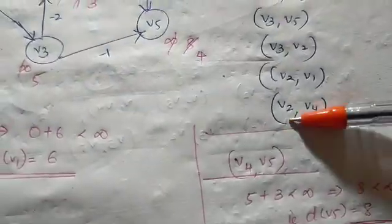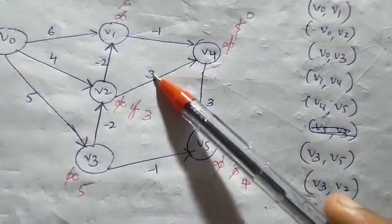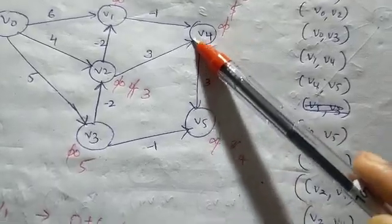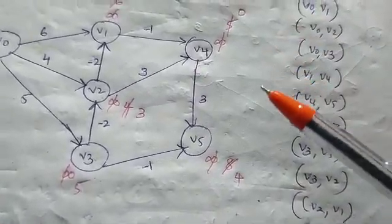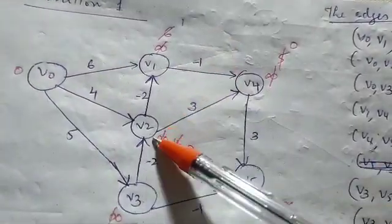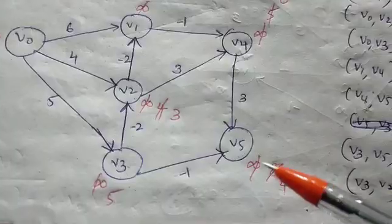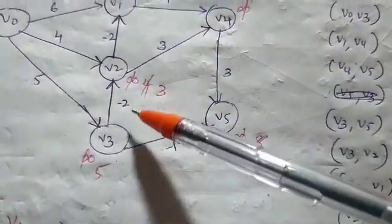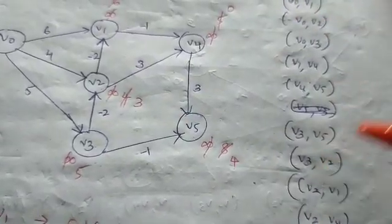After the first iteration, the distances are: V0=0, V1=1, V2=3, V4=0, V5=4, V3=5.